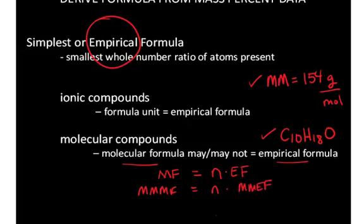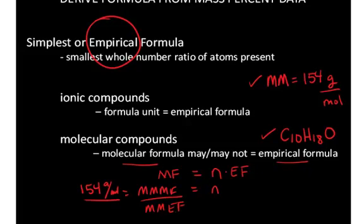We can take the molar mass of the molecular formula and divide it by the molar mass of the empirical formula to determine what N is. In this case, I know that the molar mass is equal to 154 for the molecule. Now, I need to determine the molar mass of the empirical formula.